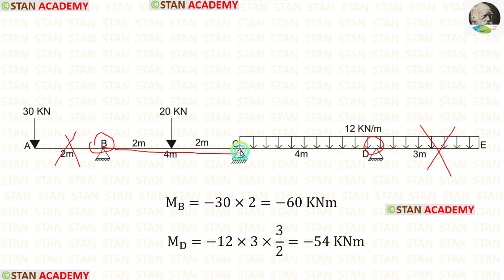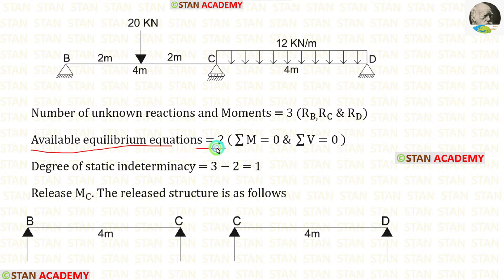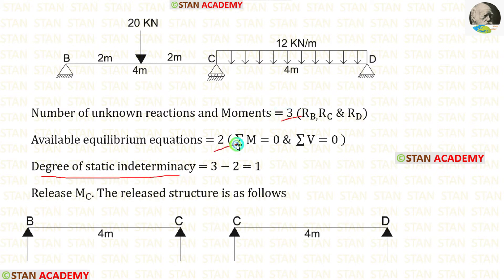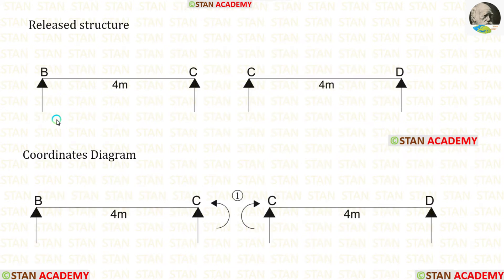Let us take the spans BC and CD and calculate MC at point C. In the spans BC and CD, the number of unknown reactions and moments are 3: RB, RC, and RD. The available equilibrium equations are 2 — sigma M = 0 and sigma V = 0. So the degree of static indeterminacy is 3 minus 2, which equals 1. Let us release MC. When we release MC from point C, this continuous beam becomes two different simply supported beams — this is called the released structure.